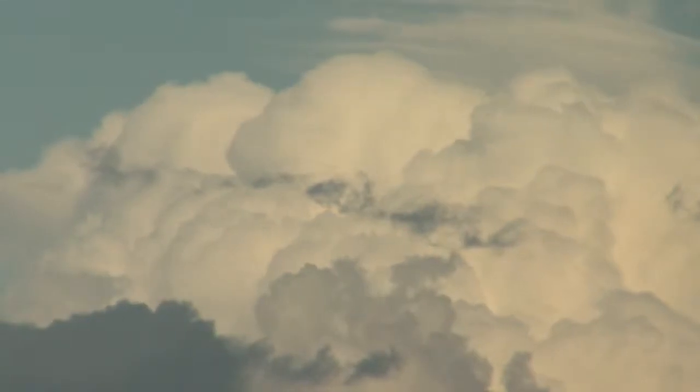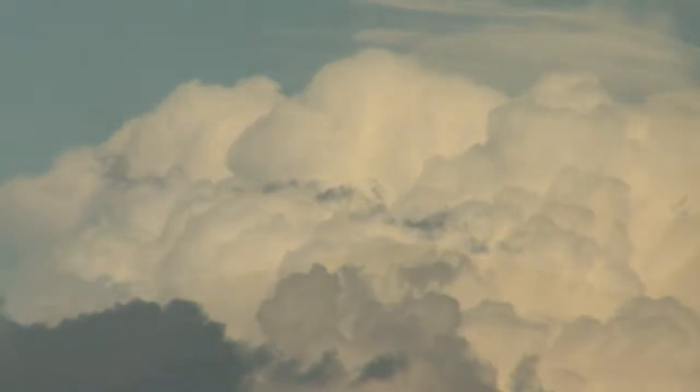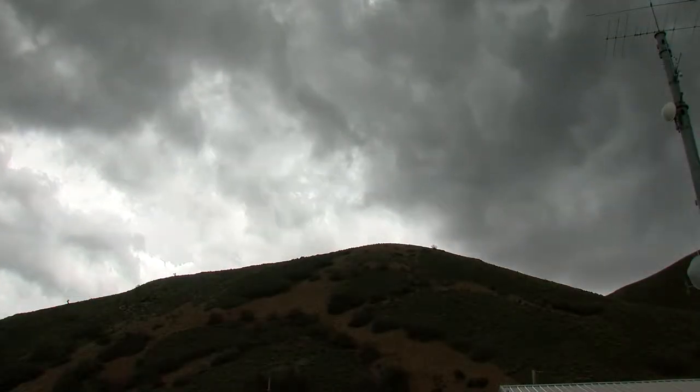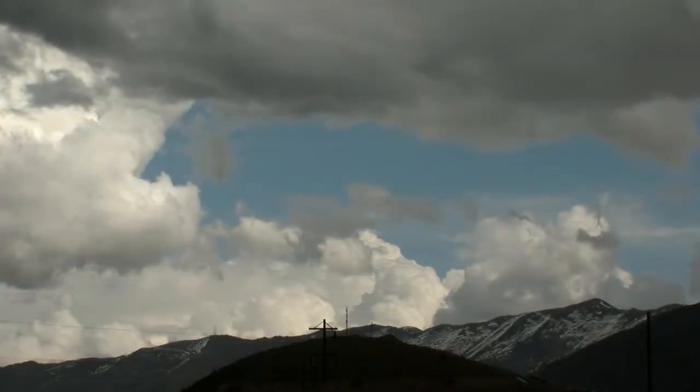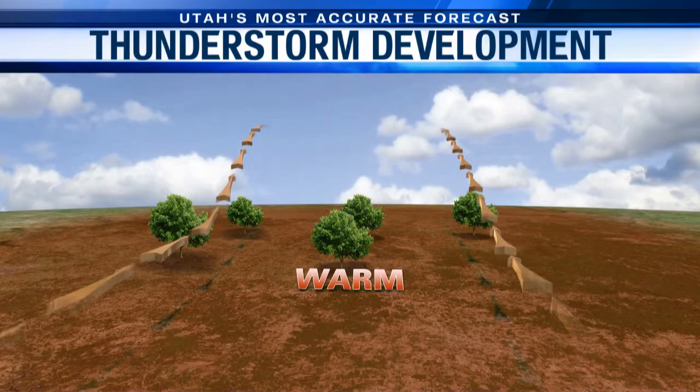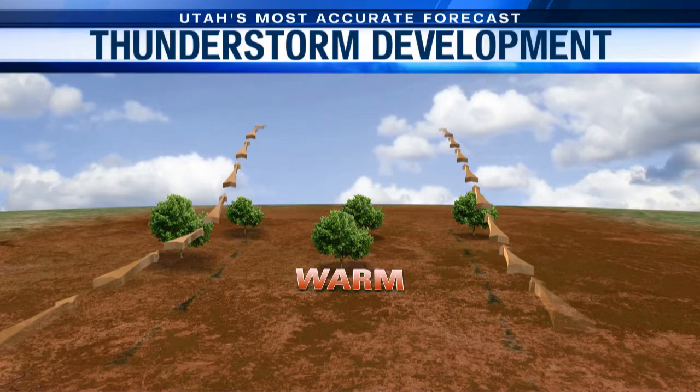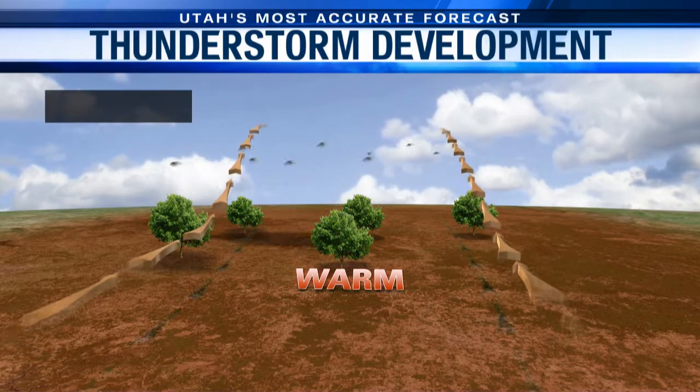But how does that actually happen in the atmosphere? Three ingredients are needed for a thunderstorm: moisture, instability, and lift. It all starts with warm, unstable, rising air.